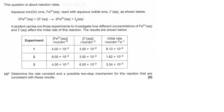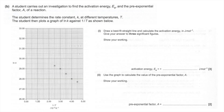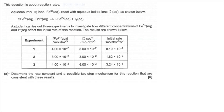So here's the question across two slides — pause the video if you want, then play on for the answers. So part A: we've got to determine the rate constant and a possible two-step mechanism consistent with the results. We're going to use these initial rates results to work out the orders with respect to each reactant, then from that get the rate equation and work out k, the rate constant.